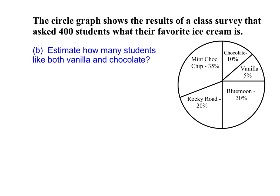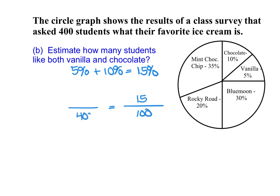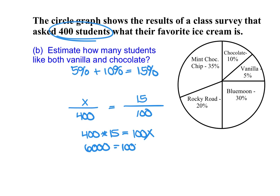For part B — how many students like both vanilla and chocolate — vanilla is 5% and chocolate is 10%, so together they represent 15%. Setting up x/400 = 15/100 and cross-multiplying gives 400 × 15 = 100x, so 6000 = 100x. Dividing by 100 gives x = 60 students like vanilla or chocolate combined.